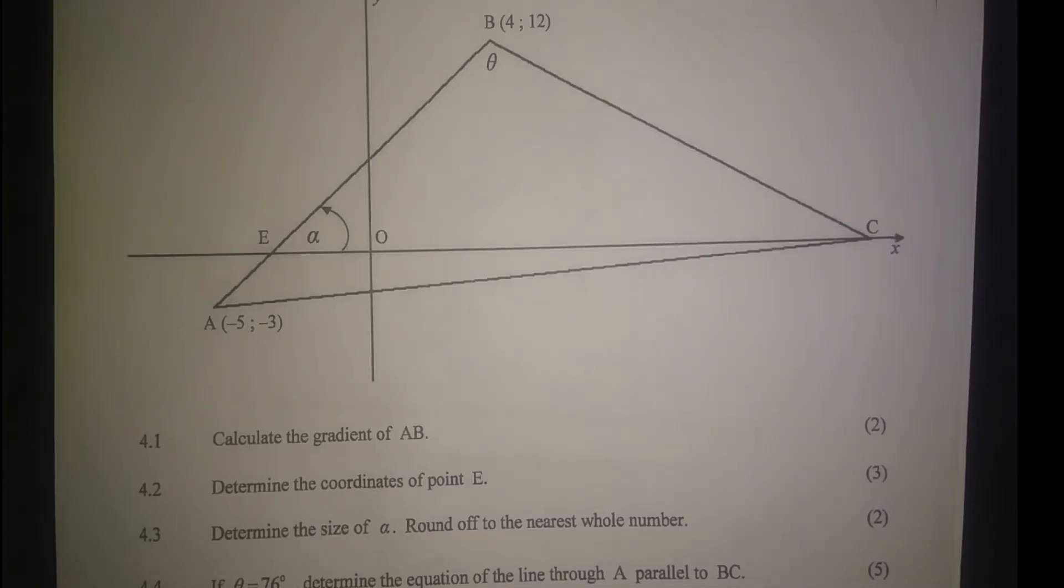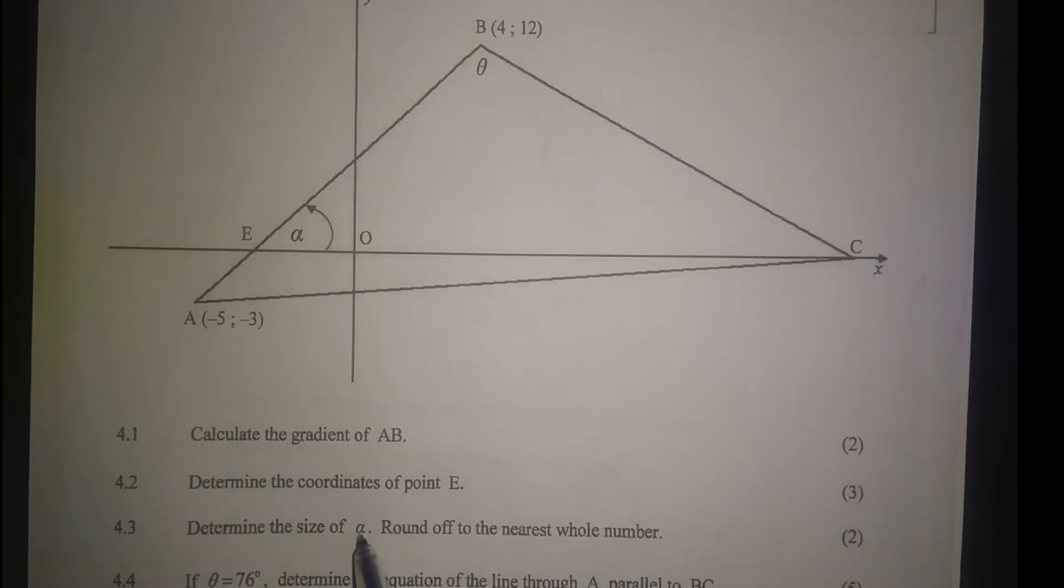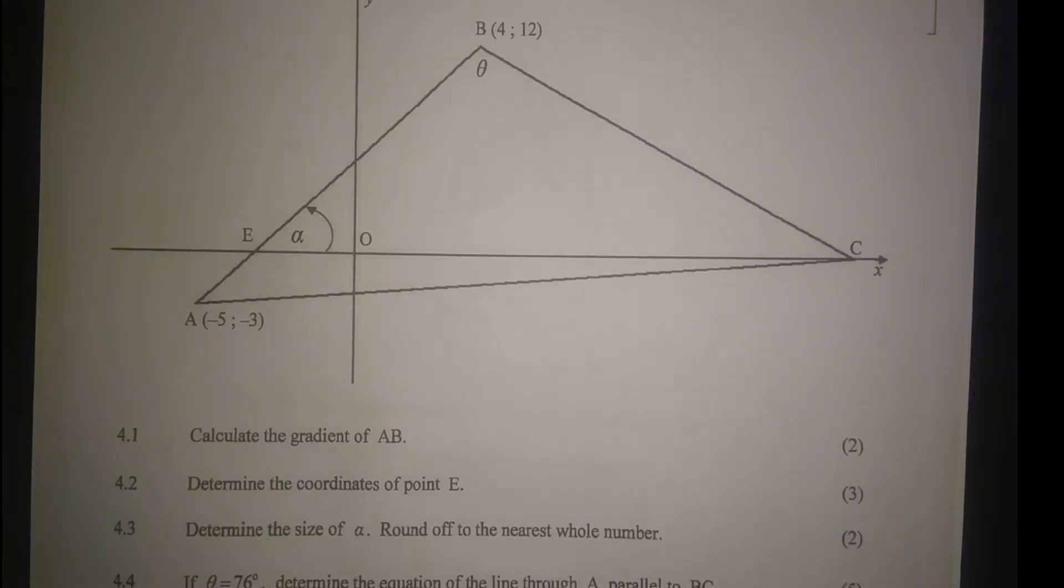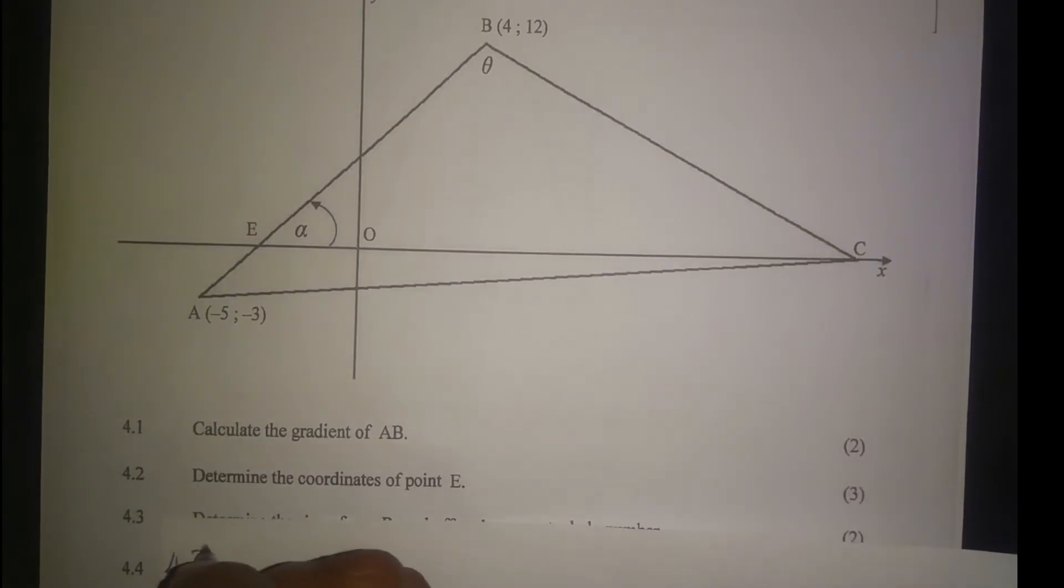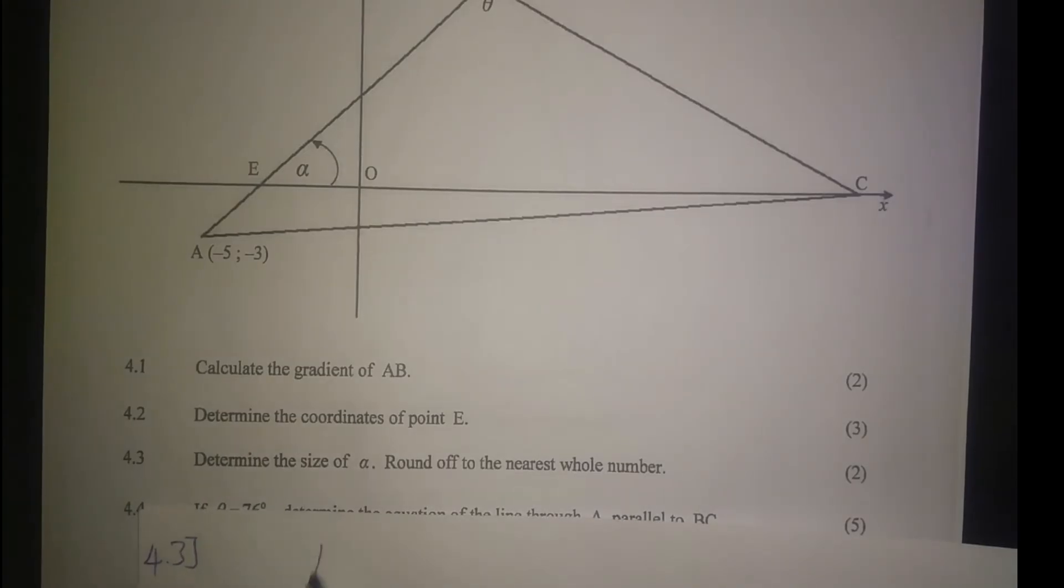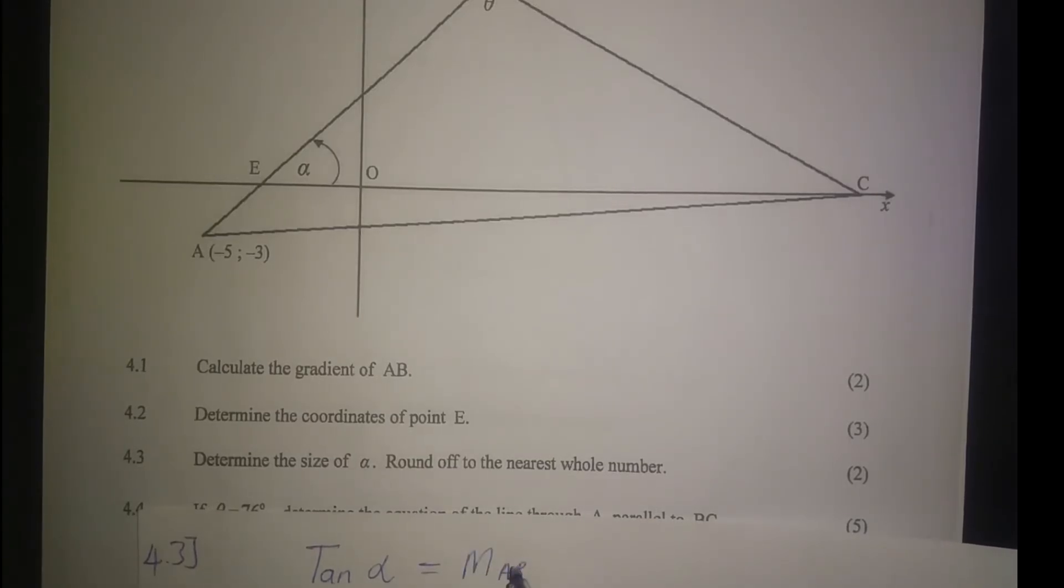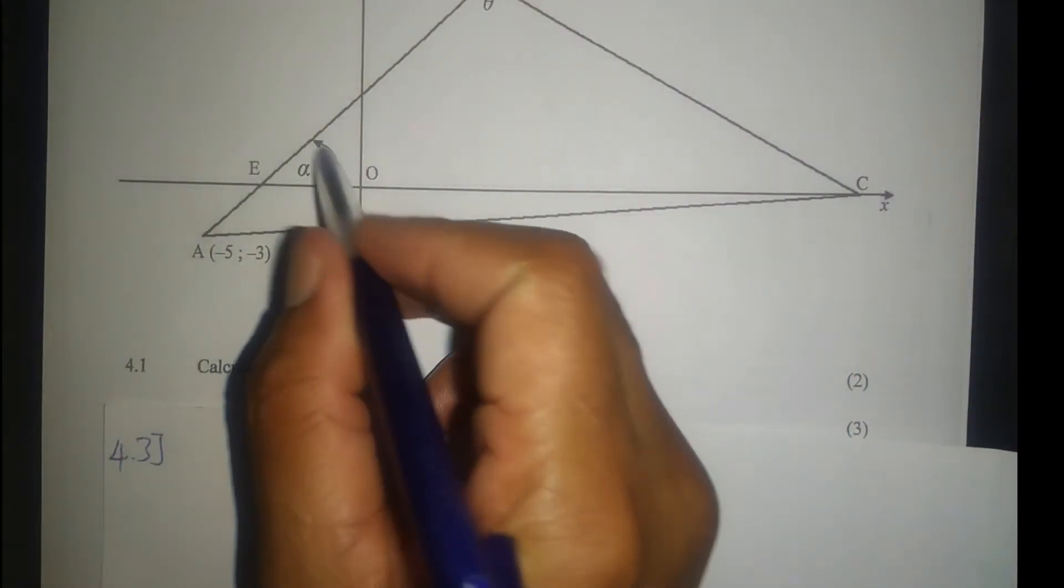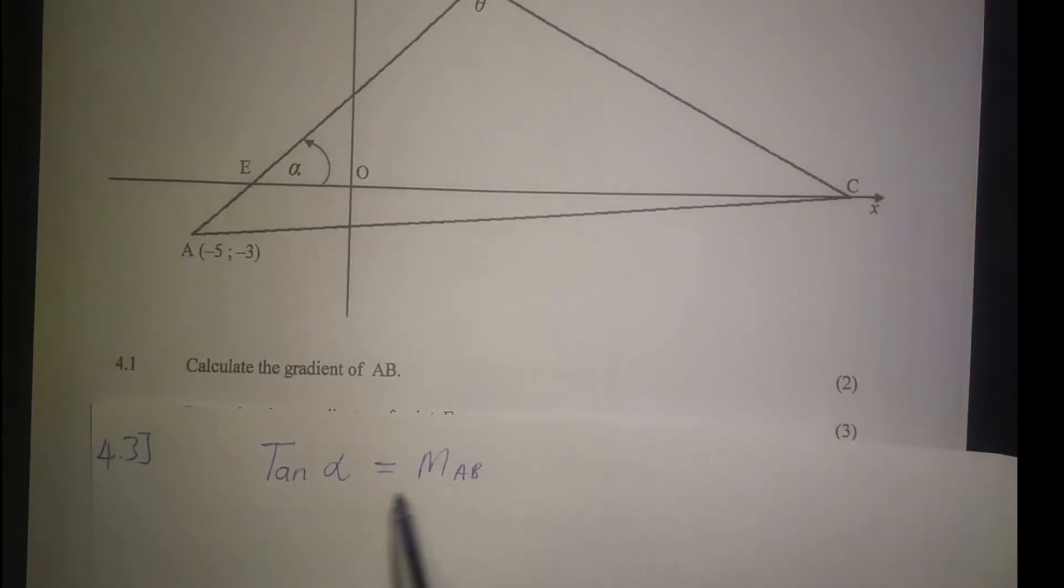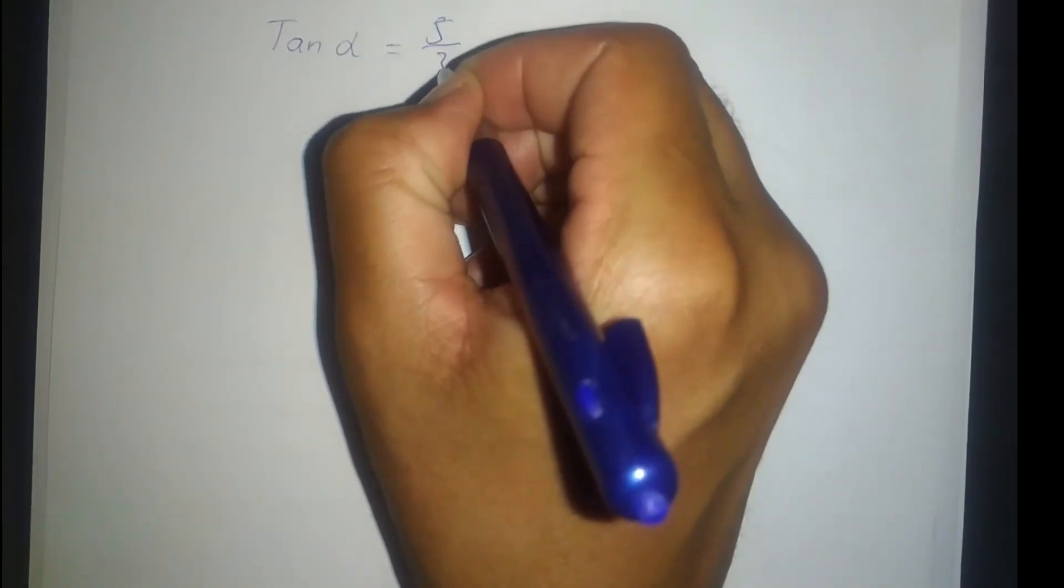4.3: Calculate alpha. Calculate the size of alpha, round off to the nearest whole number. So tan alpha is equal to the gradient AB, because alpha is the angle of inclination for the line AB.